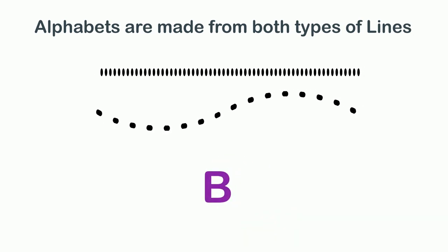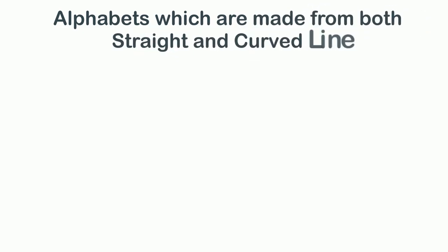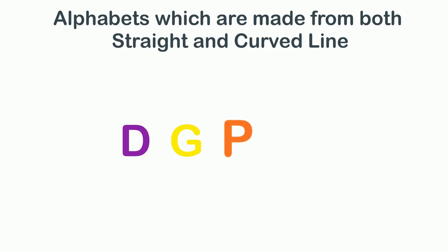Some alphabets are made from both types of lines. For example, B is made from one straight line and two curved lines. Other alphabets made from both straight and curved lines are: D, G, P, Q, and R.